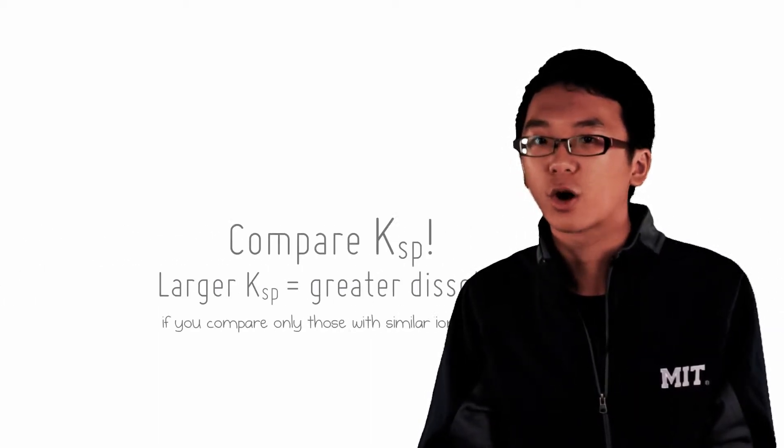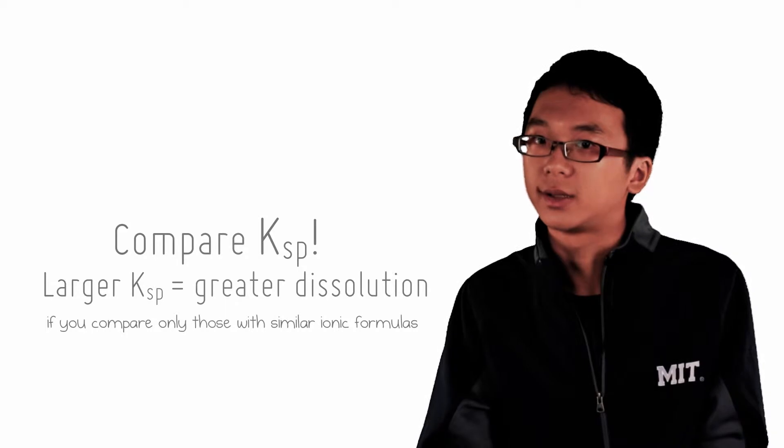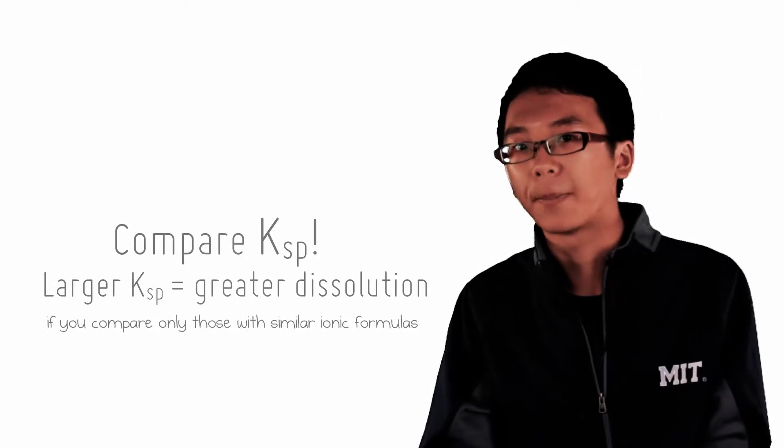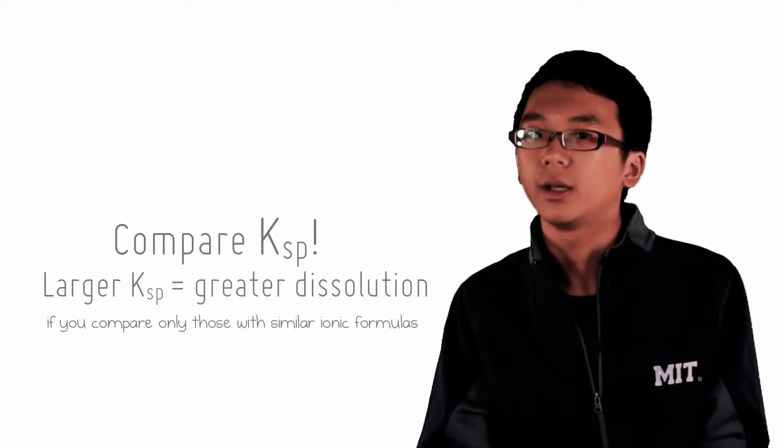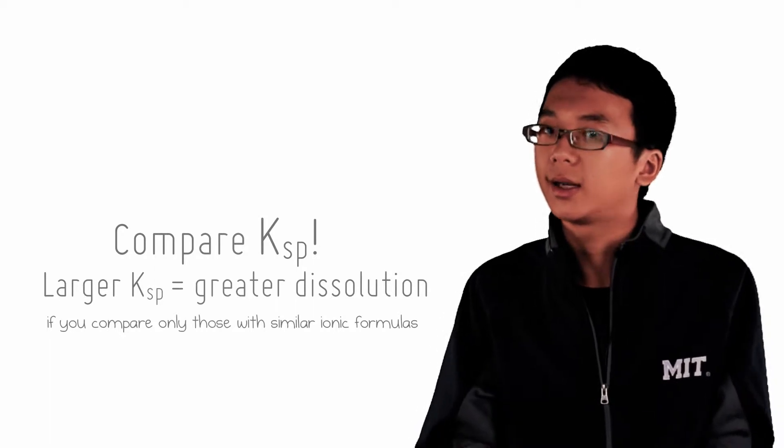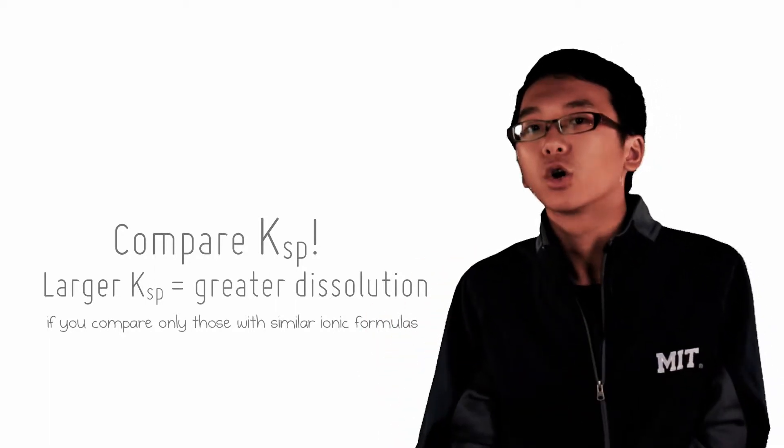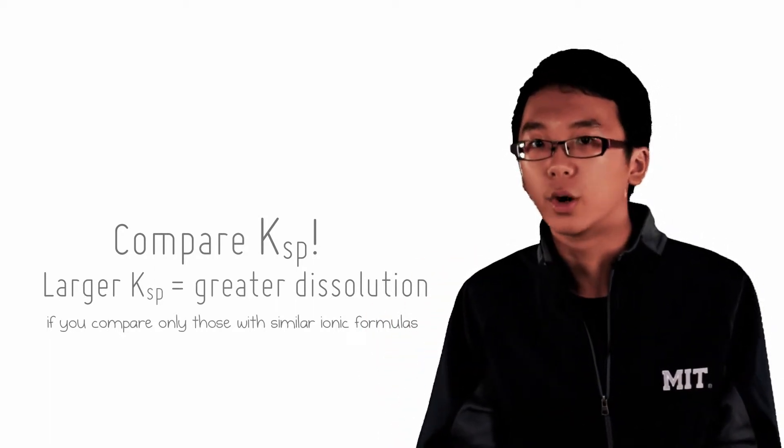Here is where we need to compare the KSP values. Now thinking intuitively, if one compound has a higher KSP than the other, it means that it is more soluble and it is less likely to precipitate compared to another compound with a lower KSP value.